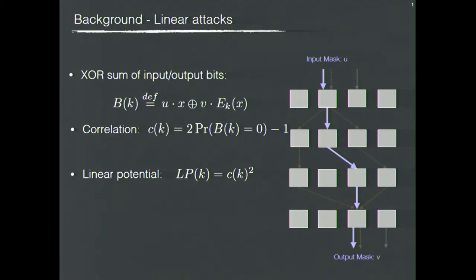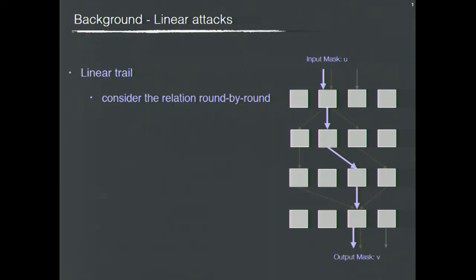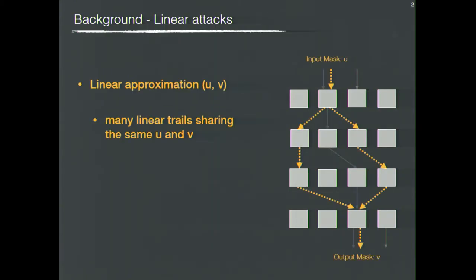In an iterated block cipher, the linear relation is considered round by round, forming a path. In linear attacks, we usually only consider the bits related to the plaintext and the ciphertext. The vectors denoting which bits are involved are called input mask and output mask, denoted as U and V. If many linear trails share the same mask U and V, they form a linear approximation.